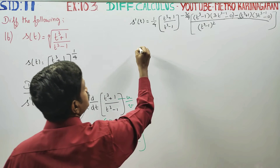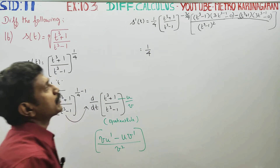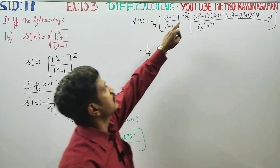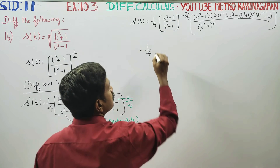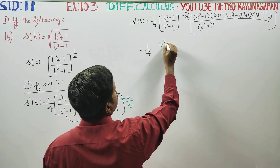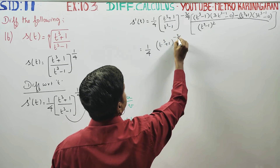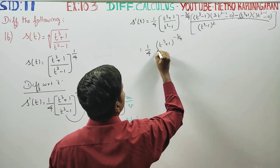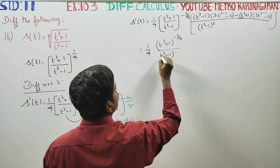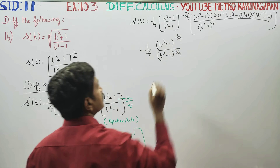Now, 1 by 4 minus 1 gives minus 3 by 4. So the outer chain rule term becomes (t cubed plus 1 divided by t cubed minus 1) raised to the power minus 3 by 4.